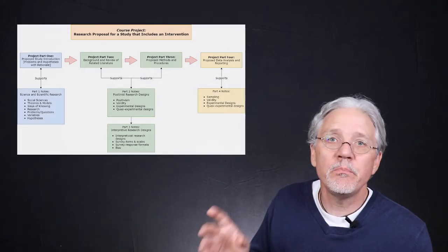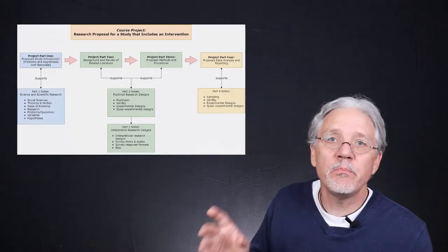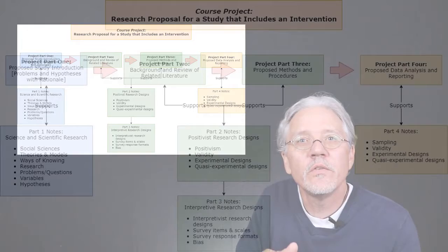Now the second big picture for the course is related to the first, and it just presents the four different parts of the course project and how each of those parts of the project relate to the four parts of the big picture model that we're following. The other big picture model where we start with science and scientific research and we move to positivist designs and then interpretive designs and then sampling.